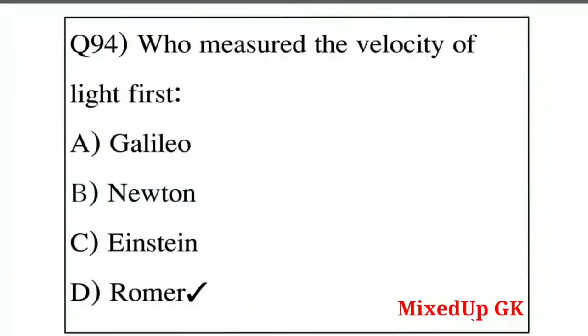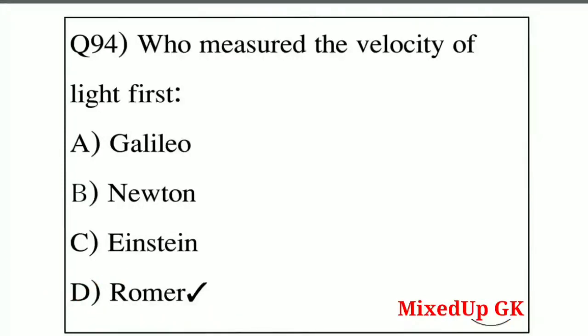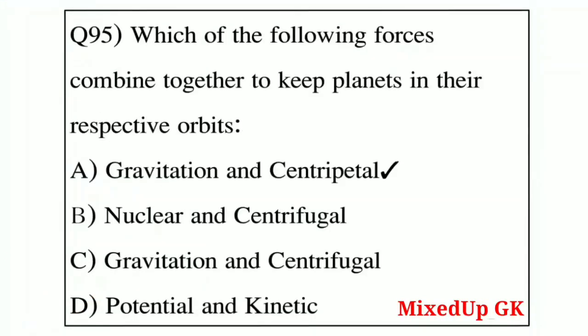Question number 94: who first measured the velocity of light? Option A: Galileo, Option B: Newton, Option C: Einstein, Option D: Romer. The correct answer is Option D — Romer.